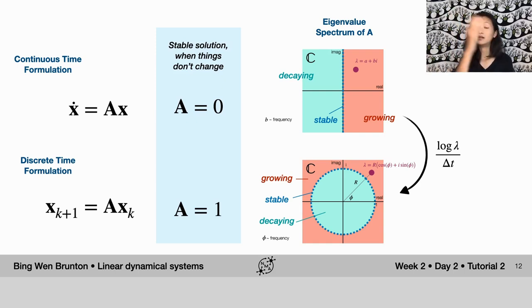And if you take the logarithm of that, what you'll discover is that the angle of the eigenvalue in this bottom formulation, this angle phi here, is proportional to the frequency of oscillation. So that's how those two are related.